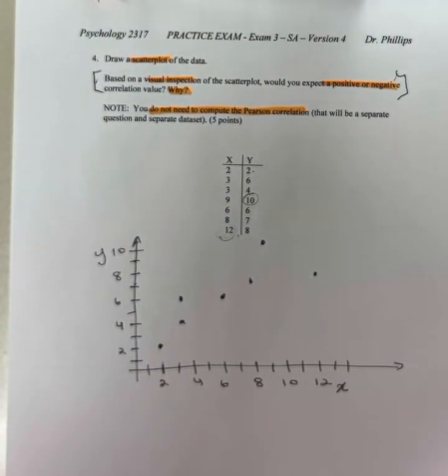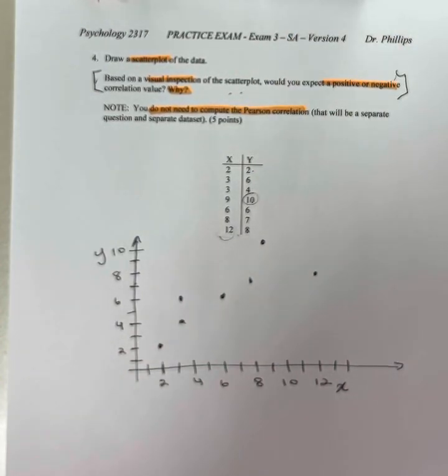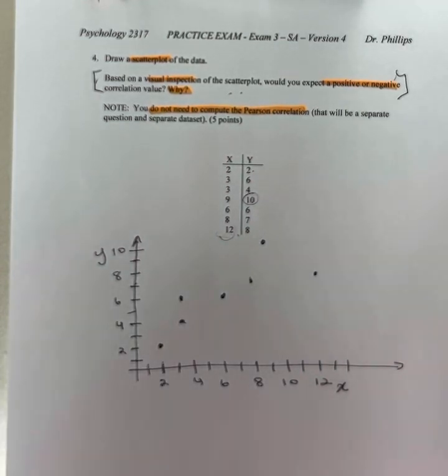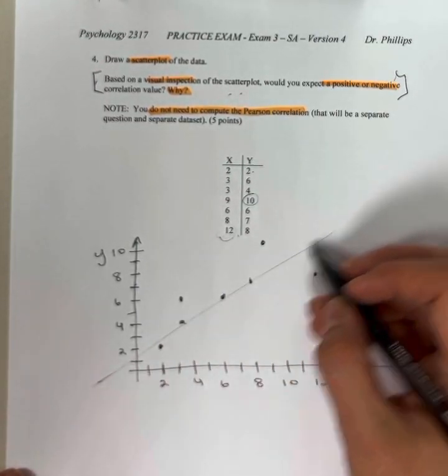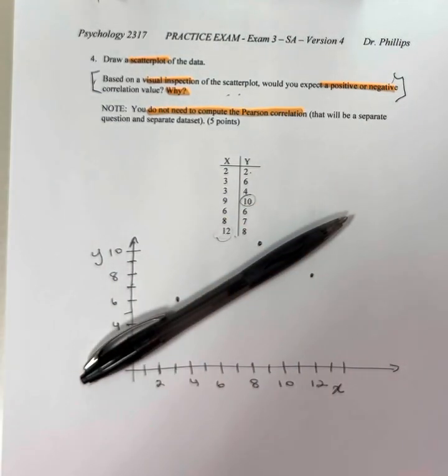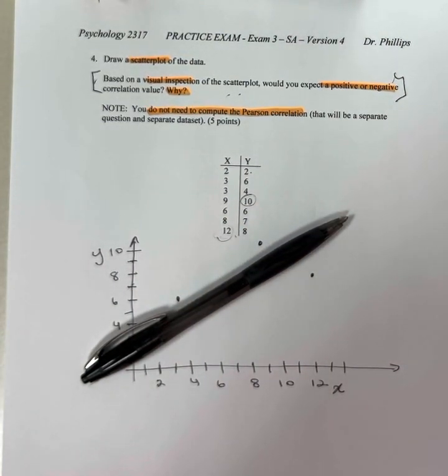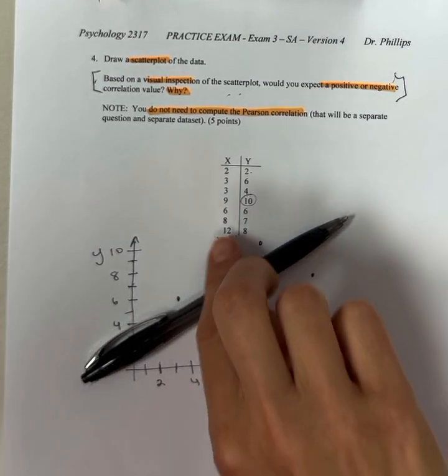That's my scatterplot. I'm not done, because I have to do this piece. Looking at the scatterplot, you don't have to run any numbers. Look at the scatterplot. Do you expect a positive or a negative correlation, and why? Well, if I were to draw a line through my data, it's sloping upwards to the right. This is the slope of a positive correlation.